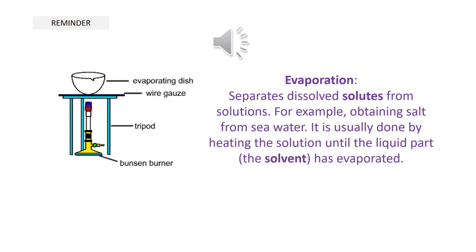Here we have the equipment we have used in school. Obviously at home you can't use a Bunsen burner, however you have got heating equipment, or if it's very sunny you may choose to let the sunshine evaporate the liquid to leave the salt crystals behind. Evaporation is a separation of a dissolved solute — which is our salt — from the solution. If you want to obtain salt from seawater, you heat the solution until the liquid evaporates to leave the salt behind. Think about how you're going to do that at home.